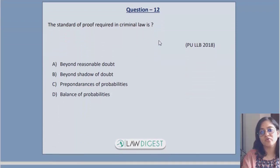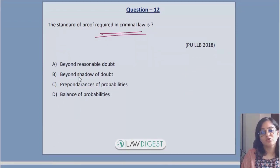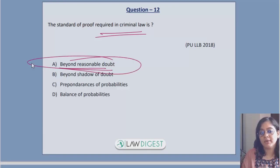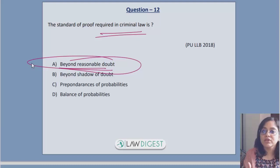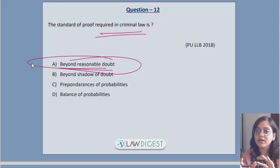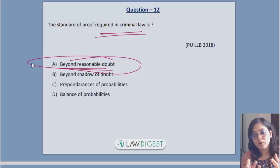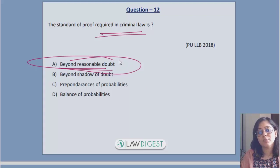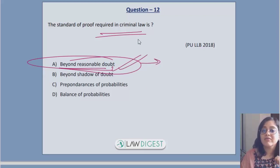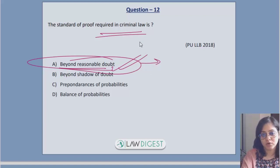Question on standard of proof required in criminal law: the standard of proof is 'beyond reasonable doubt.' In India, it is established that until and unless you prove guilt, a person cannot be put behind bars. It is very important to prove a person's guilt beyond reasonable doubt. Even if there is a little doubt, conviction of an innocent should not happen — India follows this principle.